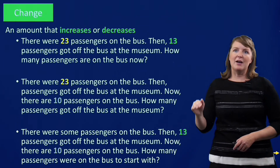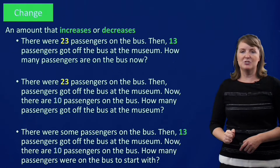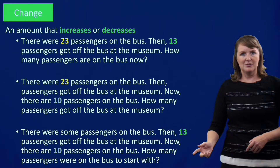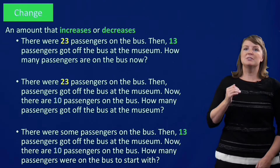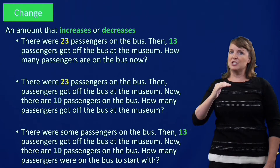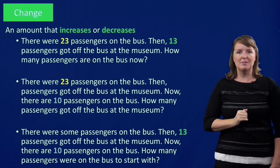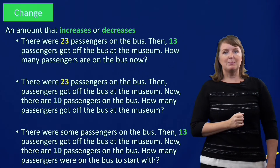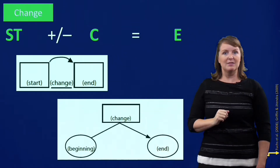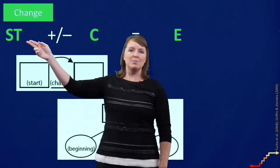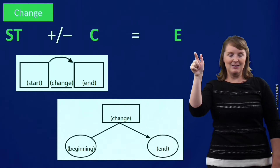And in this story, we have some passengers, 13 passengers get off the bus, and now there are 10. How many passengers were on the bus to start with? So here you're asked about the start amount. In all these stories, we have a start amount, then there's a change. That change can either be an increase or a decrease to a new end amount. Once we realize a problem is a change problem, we can use the change equation to help organize the information. The change equation is: start amount plus or minus the change equals the end amount.